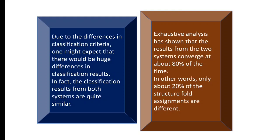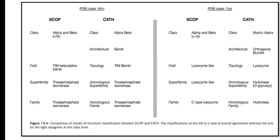The 20% difference relates to structure and folds. On the left side I'm going to show you the results from SCOP — this shows agreement in class, alpha and beta fold, and superfamily. On the right side is shown the disagreement in class, alpha and beta, and mainly alpha architecture.